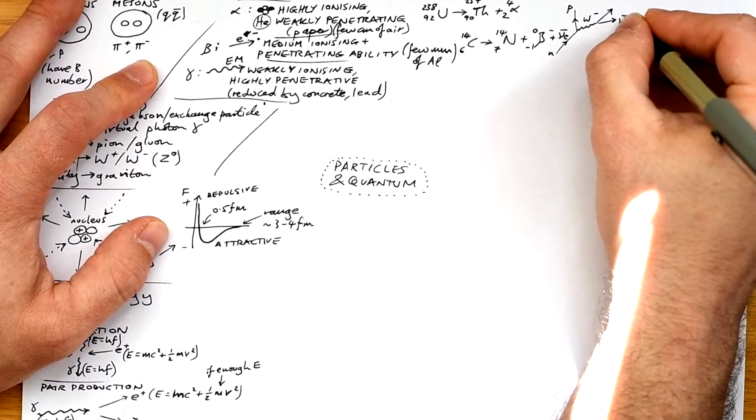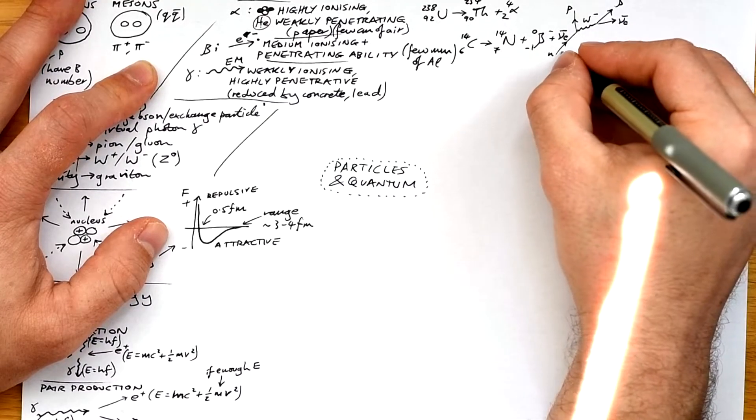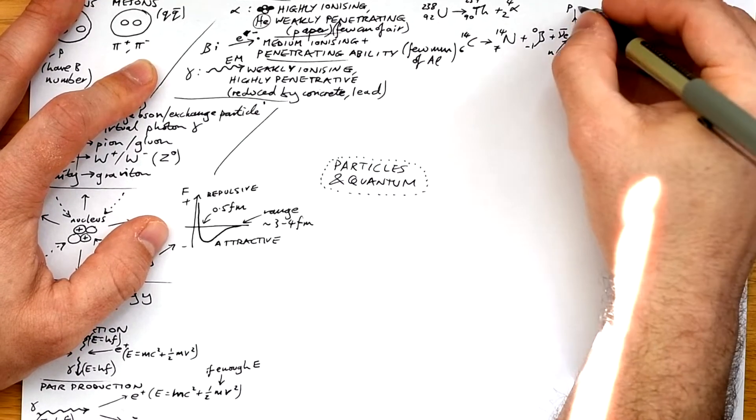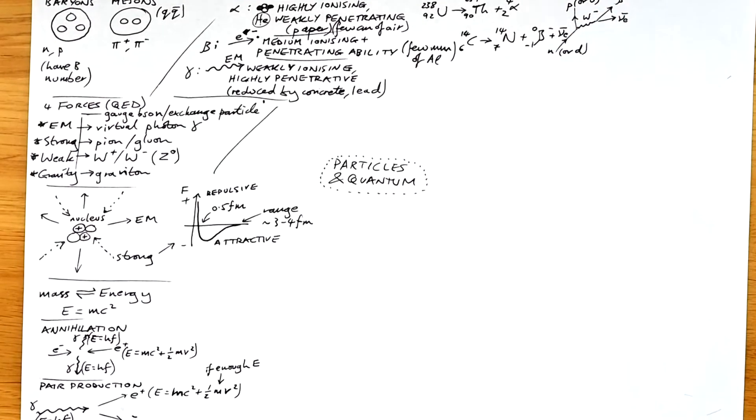Here's a Feynman diagram for beta minus decay. We have a neutron turning into a proton, and the W minus boson takes the negative charge away, as it were, to produce an electron and an anti-electron neutrino.